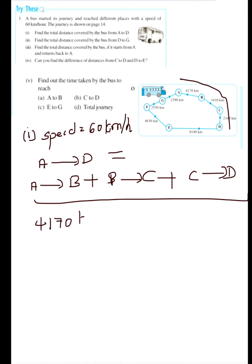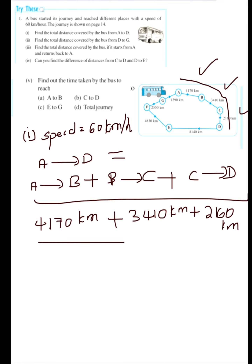The distance from A to B is 4170 km. Now what is B to C? It is 3410 km. Plus what is C to D? It is 2160 km. So the distance covered from A to B is 4170 km, plus B to C is 3410 km, plus C to D is 2160 km. Now let's add all those: 4170 plus 3410 plus 2160.